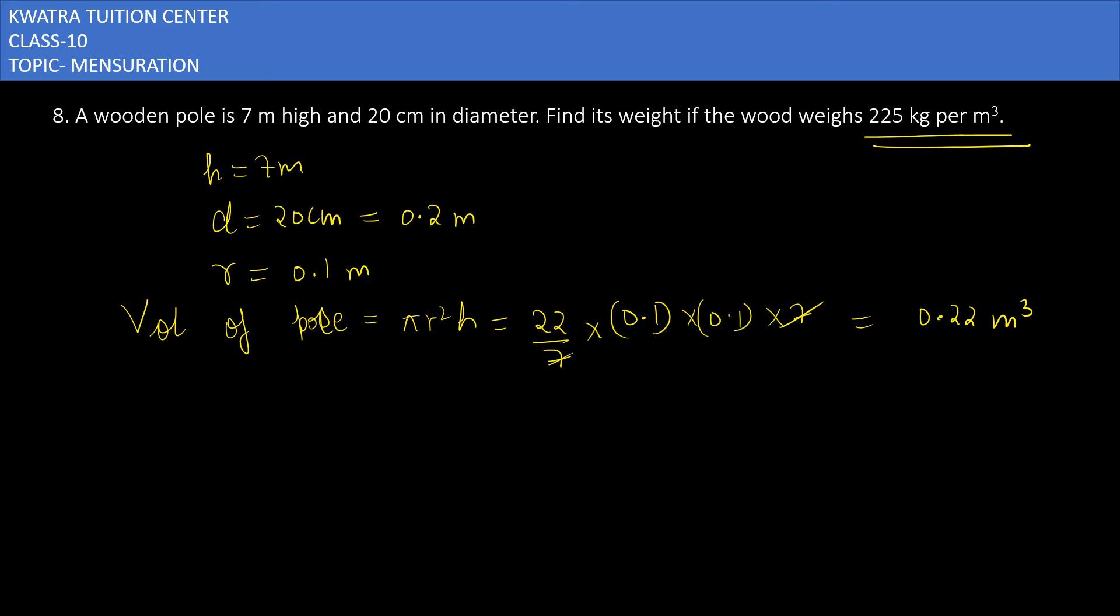Then you have to find the weight. So how will you find the weight of wood? Weight of wood per meter cube will be equal to 225. For 1 meter cube it's given as 225 kg, but we have to find for 0.22. For 1 meter cube it's this much, so for 0.22 how much will it be? You just have to multiply it with...